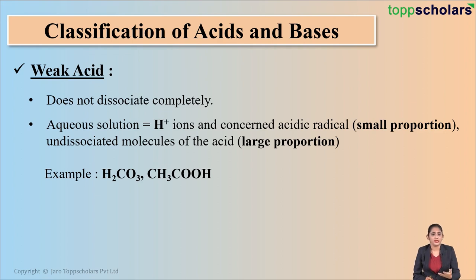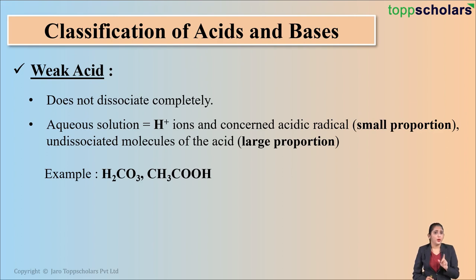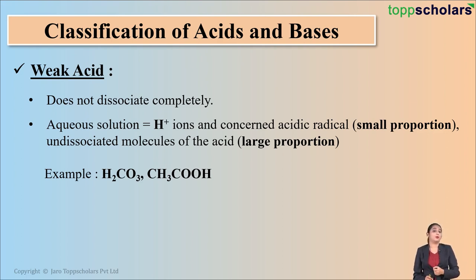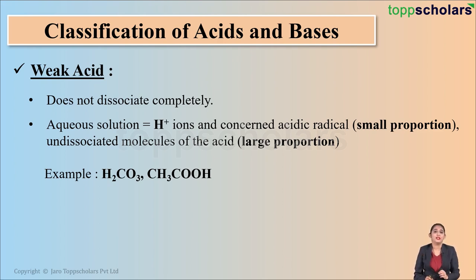Let me give you one example. Let's take acetic acid. Suppose I give you 100 molecules of acetic acid and you dissolve them in water. A weak acid does not dissociate completely, so not all 100 molecules are going to dissociate. Out of these 100 molecules, only 60 molecules undergo dissociation and the remaining 40 remain undissociated. So the aqueous solution of a weak acid will contain a small proportion of H+ ions and the concerned acidic radical, whereas a large proportion of undissociated molecules of the acid.